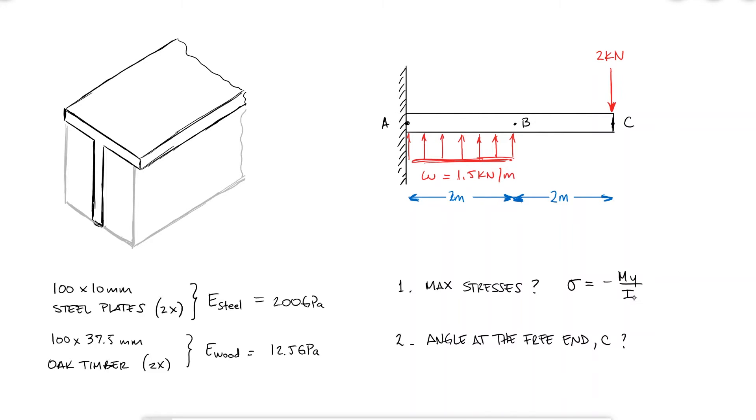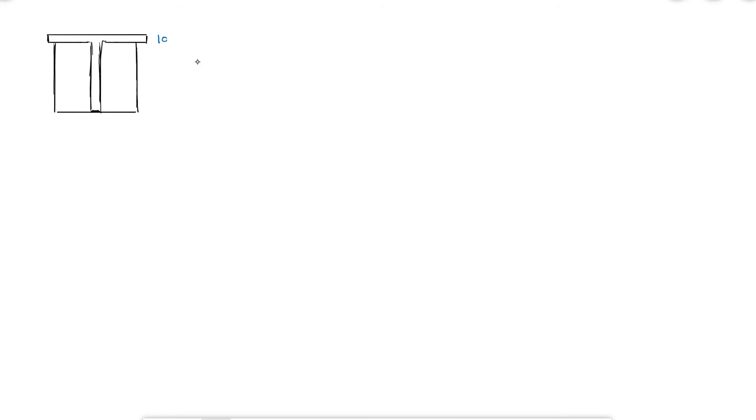To calculate the stresses, we'll need to find the maximum bending moment m, which we can find by using a bending moment diagram, and we need y and i, the distance to the top or bottom of the beam from the neutral axis, and the second moment of area, which also depends on the neutral axis. To calculate the angle at the free end, we need to find the moment as a function of x, so that by integrating, we can evaluate the angle function at x equals to 4 meters. Since that expression also relies on the second moment of area i, and to do that we need the neutral axis, we'll start with the neutral axis first.